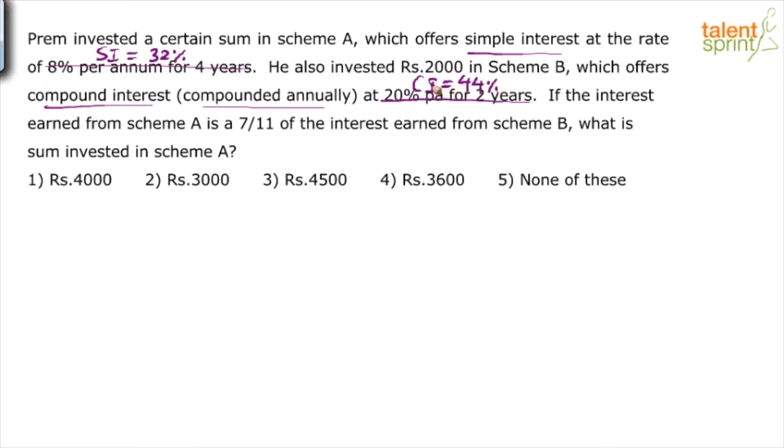Don't ask me how, why - all this have been through the video. You know that in case of compound interest, we'll add, we'll use effective percentage formula. So 20% per annum for two years is what? A plus B plus AB by 100.